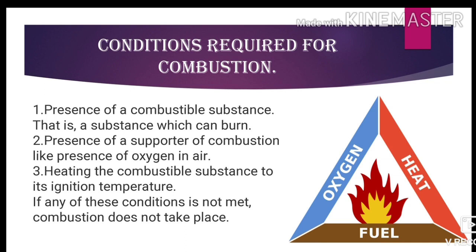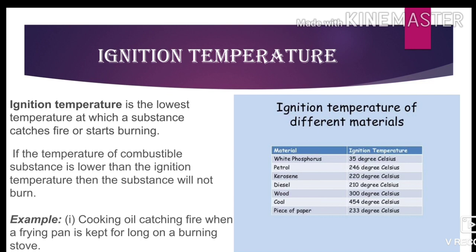For combustion to take place, all three conditions — presence of a combustible substance, supporter of combustion, and attainment of ignition temperature — are required. Ignition temperature is the lowest temperature at which a substance catches fire or starts burning. If the temperature of a combustible substance is lower than its ignition temperature, it will not burn. For example, cooking oil catches fire when a frying pan is kept on a burning stove for long, because the oil is heated up to its ignition temperature.